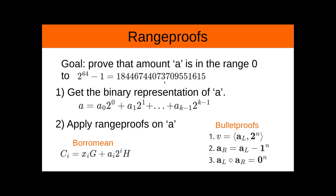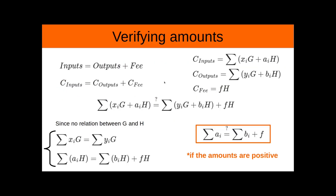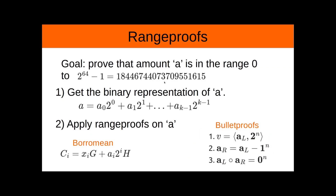How do we verify if the amounts are positive? For this, we use range proofs. The goal of the range proof is to prove that the amount A is in the range 0 to 2 to the power of 64 minus 1, which is the maximum amount of money allowed in a transaction.